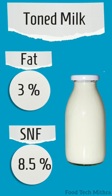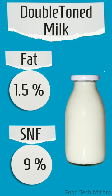Toned milk is made by diluting full fat buffalo milk with skim milk and water to reduce its fat content without compromising nutritional value, and it contains 3% fat and 8.5% SNF. Double toned milk contains 1.5% fat and 9% SNF, and is made by mixing whole milk with skim milk or skim milk powder.